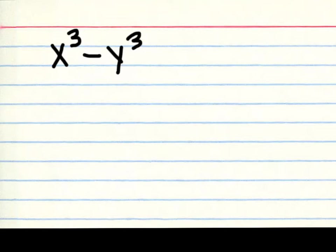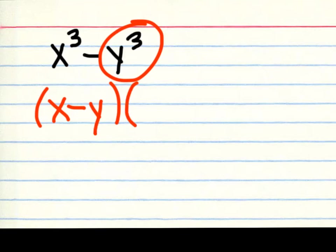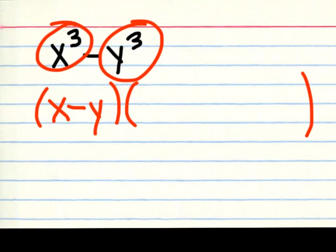First example, very simple: x cubed minus y cubed. If it is really a difference of two cubes, then you can find the cube root of each one. What would you multiply by itself three times in order to get x cubed? That would be x. So according to the formula, you put x first, then minus the cube root of the second term, which is clearly y. Then whatever the cube root of the first part was, you put that in the next quantity as a square — so it goes down as x squared.